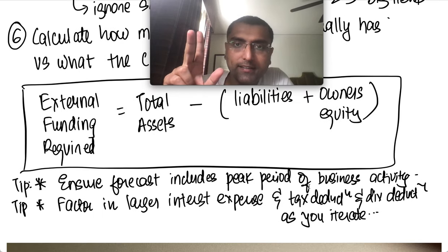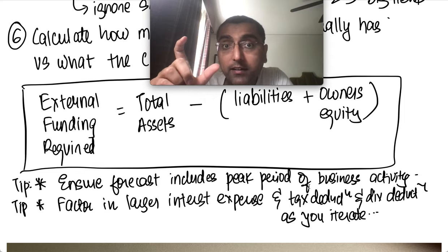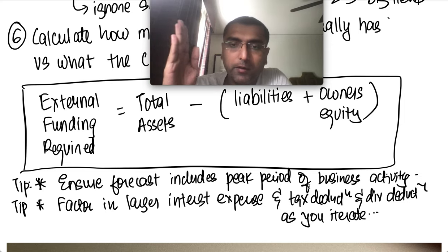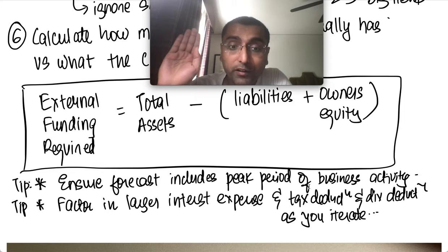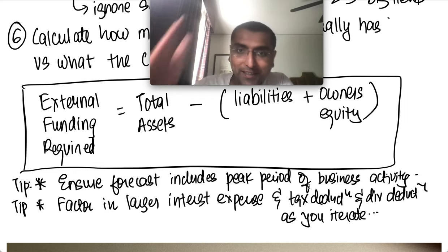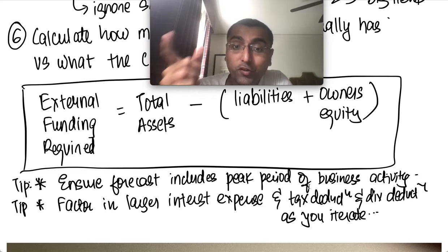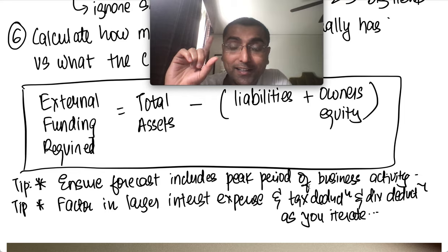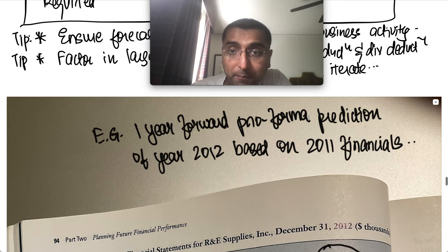Two important tips in these six steps: First, ensure you capture the peak period — take the full year, not just the last quarter, because the first quarter might be peak while the rest are downturns. Understand the business cycle. Second, make sure interest expense is added, and tax and dividend deductions are removed as you iterate through the pro forma.